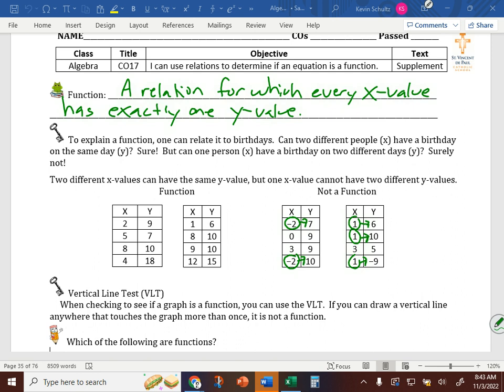Notice in the two that are functions, all of our x values are different. Two, five, eight, four. Nothing repeats. The second one, they're also different. One, eight, nine, twelve. Nothing repeats. It doesn't matter that y repeats here. Because by definition, it's for every x value has exactly one y. Eight and nine might have the same y value, but they're different x's.